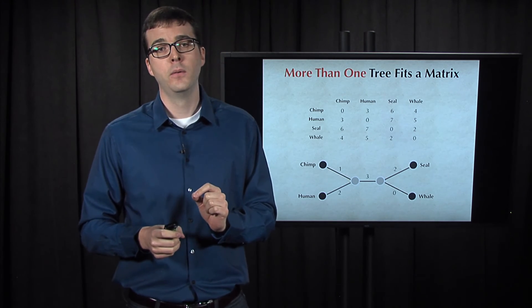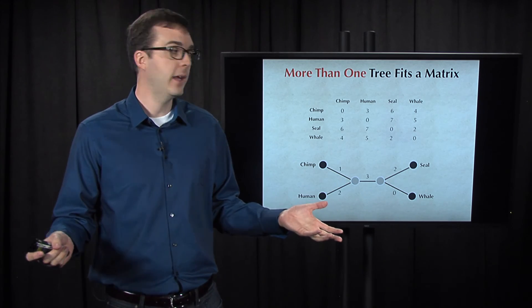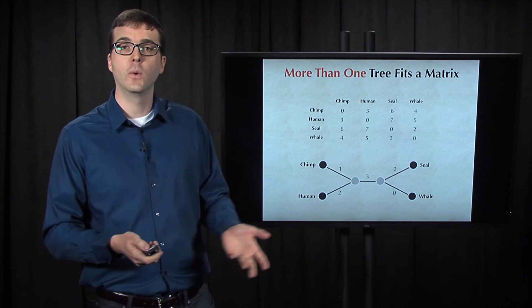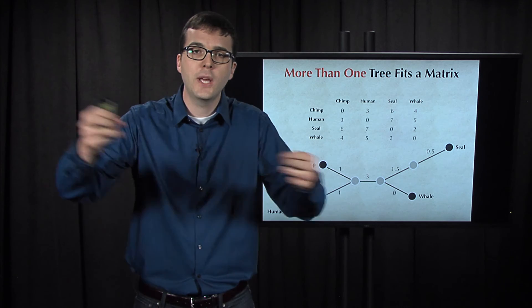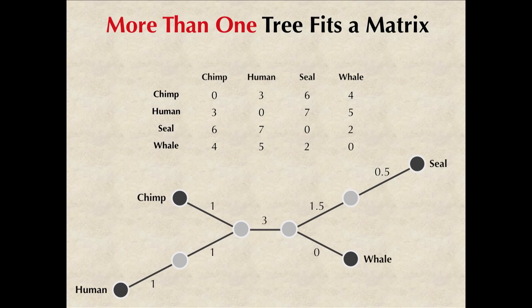There is another problem though, which is that an additive matrix could have more than one tree fitting it, and it will. Here's the tree we had before fitting the toy distance matrix, but we could simply stretch out the edges into longer paths and still have a tree that fits the distance matrix.